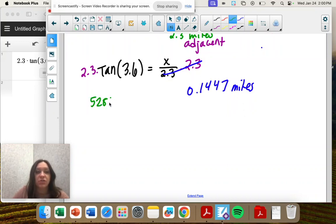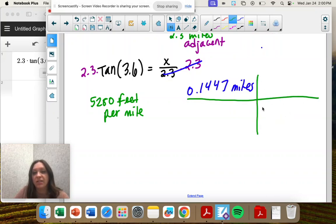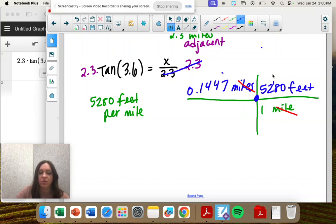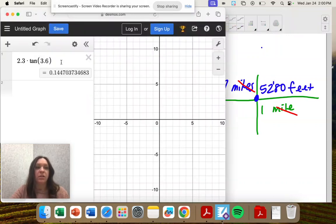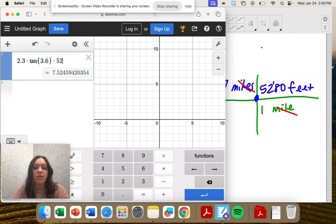So 5,280 feet per mile. So what happens is we make a little X here and we say one mile. We put that diagonal because they're going to cancel out. Equals 5,280 feet. And these mean multiply. So we're going to times those two numbers.